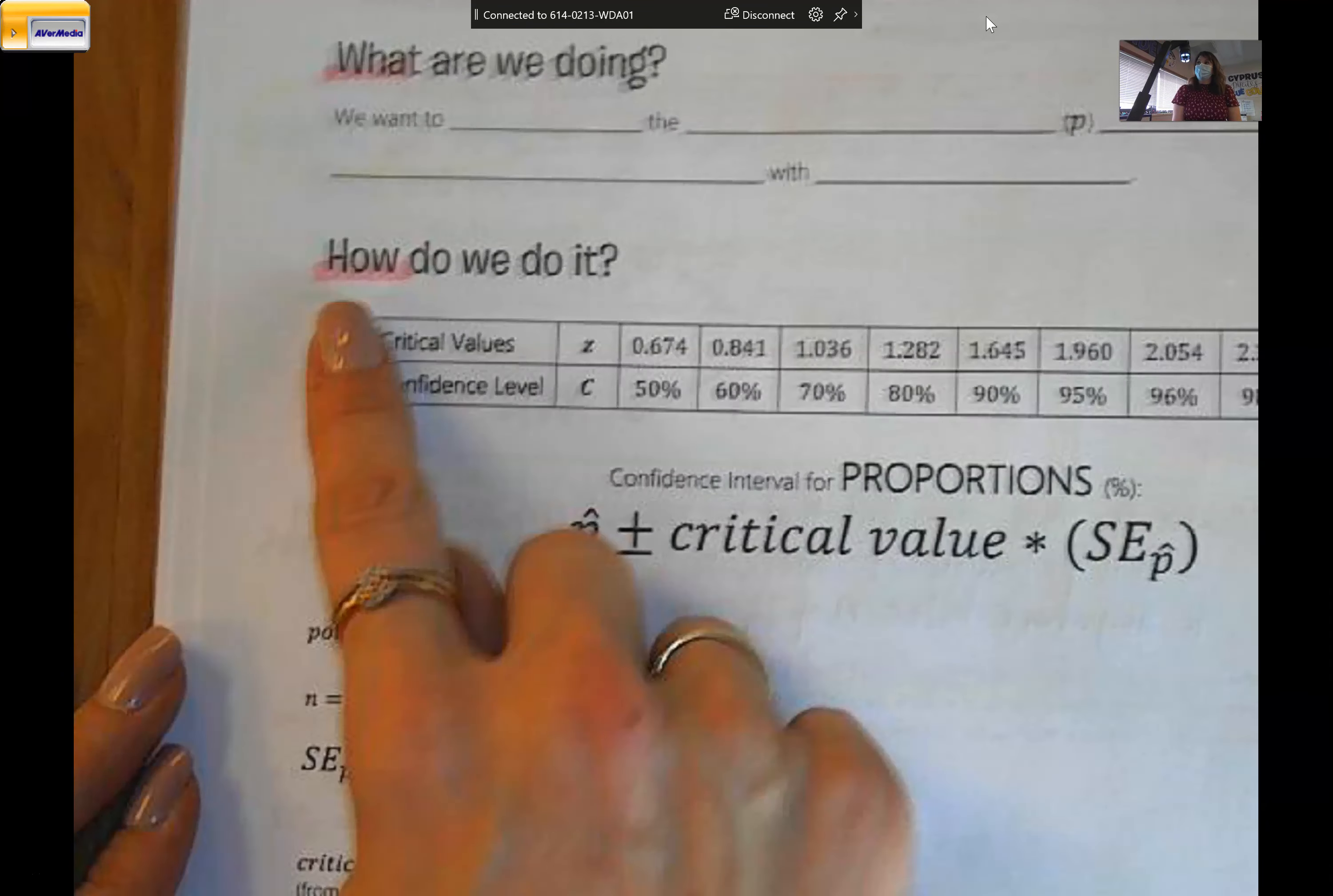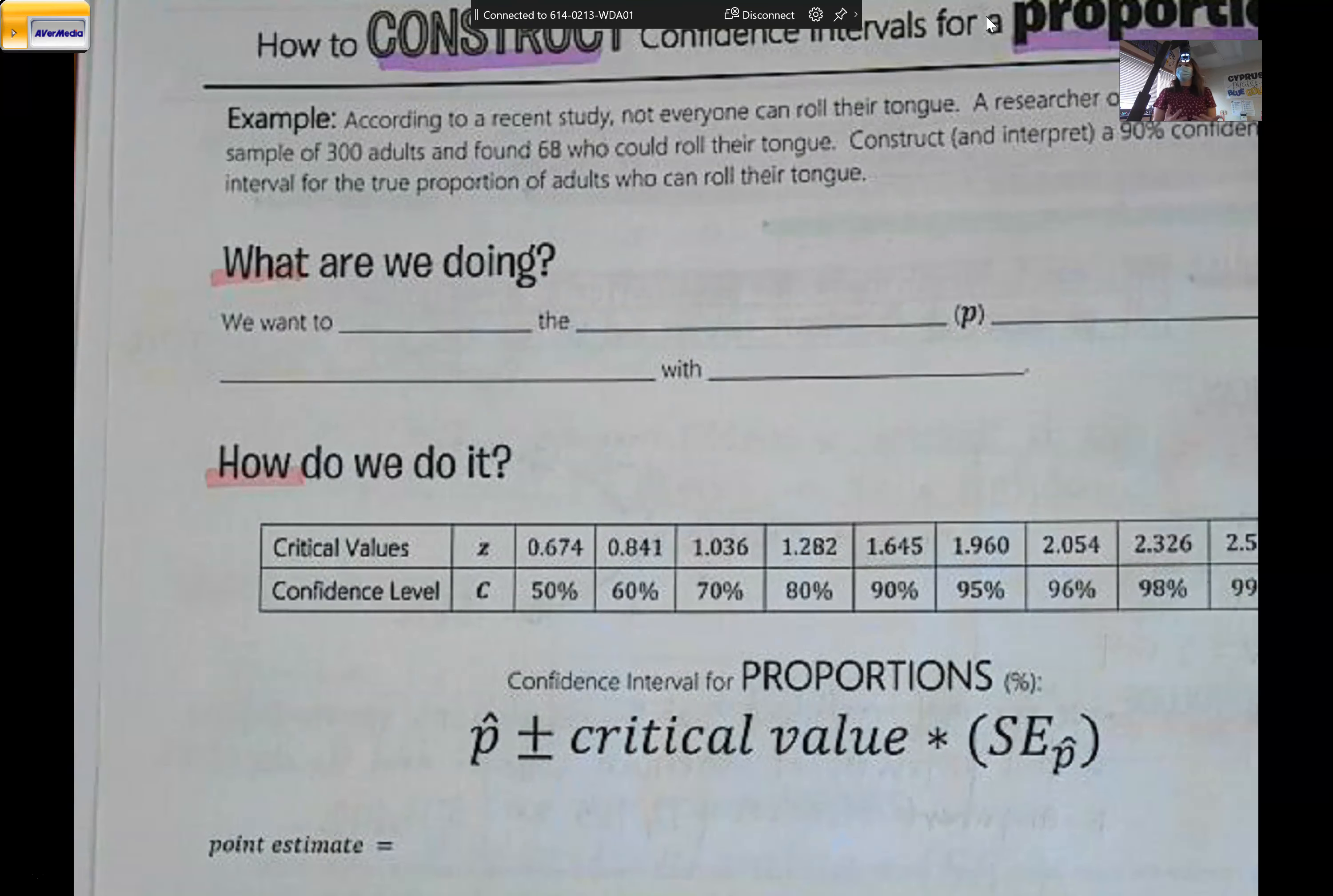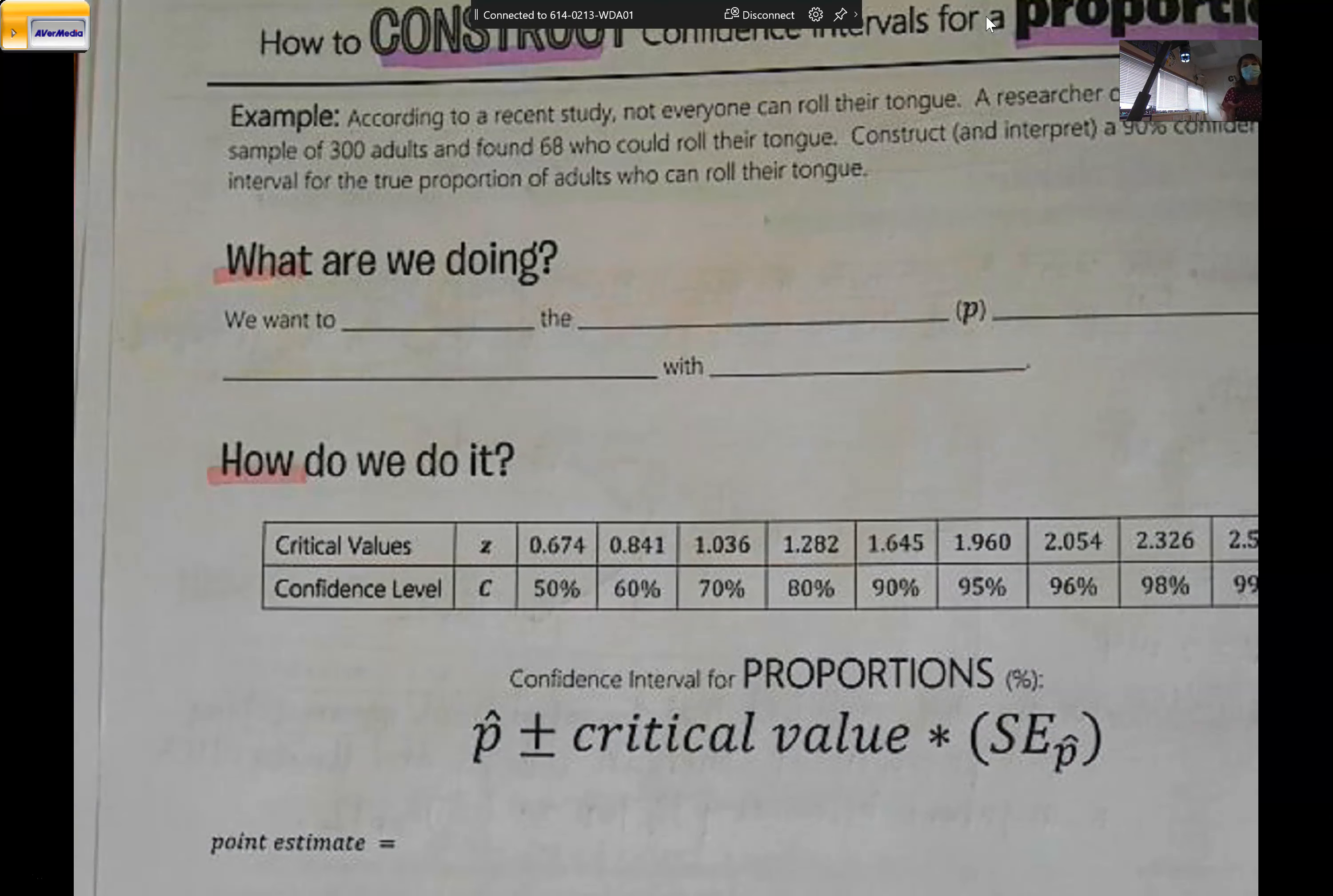The setup is the same. We're still doing what, how, and conclude. And literally, we do basically everything the same, except for this time, instead of finding an average where you add all the numbers and divide, you're finding a percent.